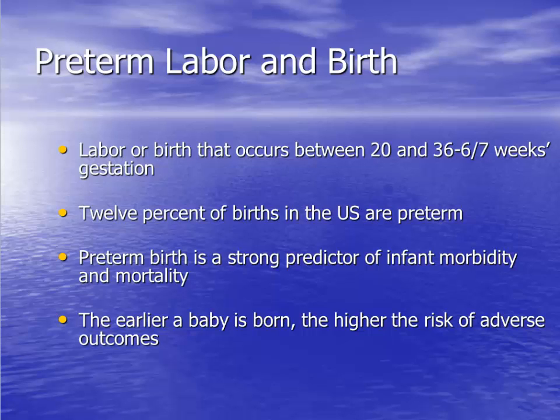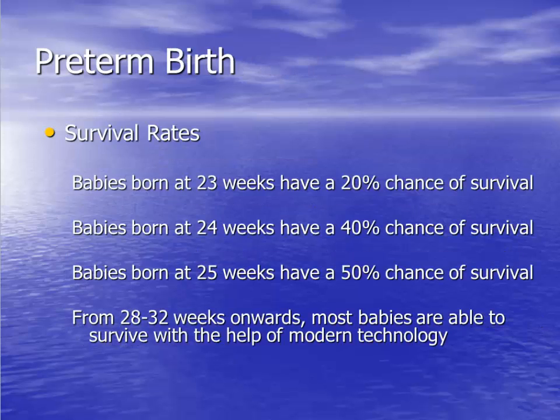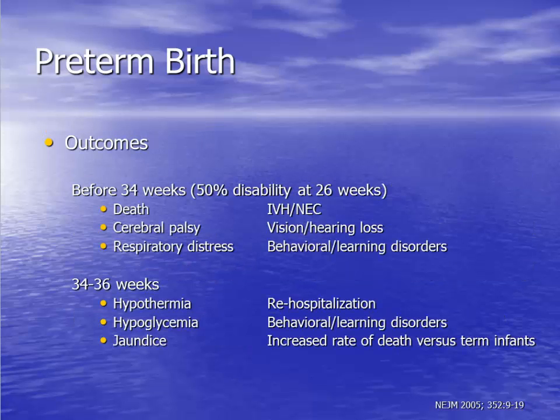The problem with preterm labor leading to preterm birth is the increased occurrence of fetal morbidity and mortality. The earlier a fetus is born before term, the higher the chance for fetal morbidity and mortality. Severe problems are associated with preterm birth before 34 weeks. Between 34 and 36 weeks, risks to the fetus are lower but morbidity and occasional mortality still occur. In some investigations, fetal morbidity can occur with delivery as late as 37 and 38 weeks of gestation.